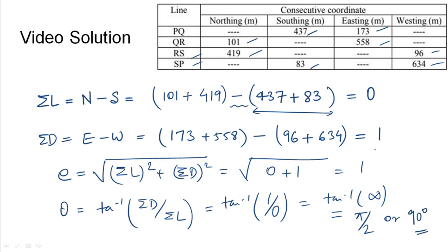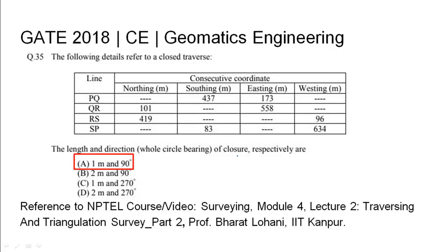So the magnitude of the closing error and the angle of closing error were found as 1 and 90 degrees respectively. So the length and direction of the closure respectively are 1 and 90 degrees which is option A. The relevant NPTEL reference has been listed.